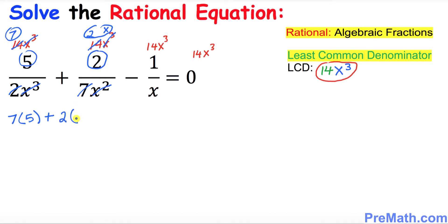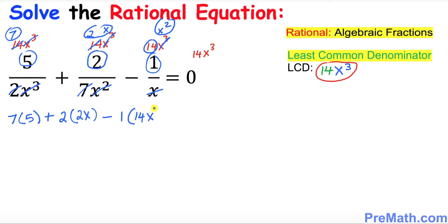For the last term: x divides into x³ giving x², so we get 1 times x², which is 14x². Set the whole expression equal to 0 — anything times 0 is 0. Put down 0 on the right side.